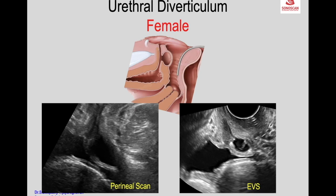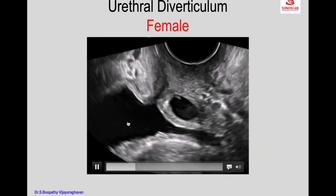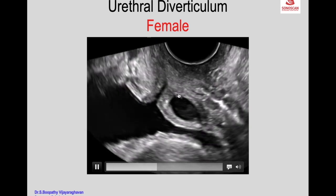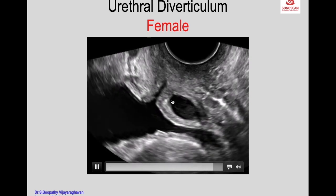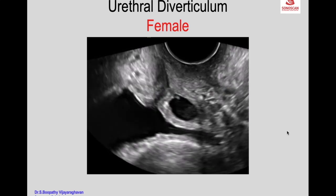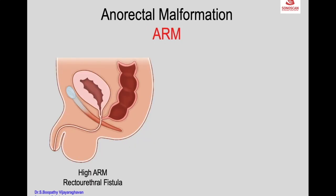Urethral diverticulum is diagnosed by perineal scan. The perineal scan shows the bladder, urethra, vagina, and the diverticulum. Endovaginal scan shows the bladder, urethra, and diverticulum with its communication to the urethra. In real time, debris is seen within the diverticulum, and with pressure, the debris enters from the urethra into the diverticulum, confirming urethral diverticulum.